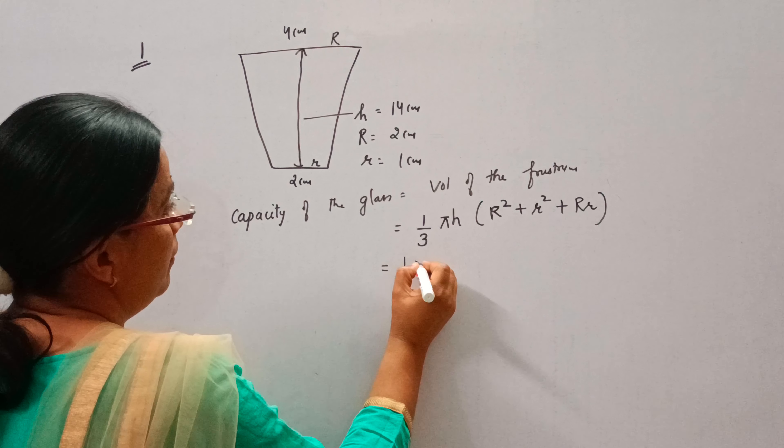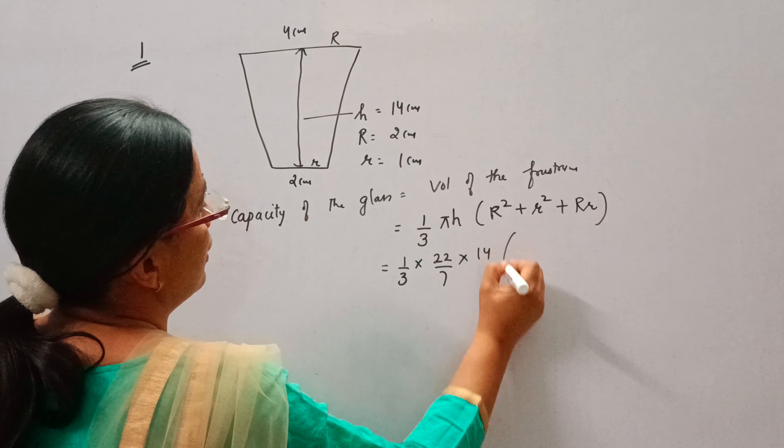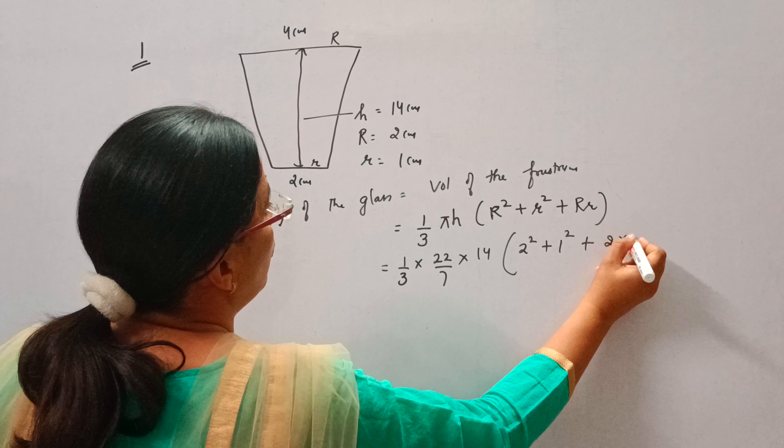1 upon 3, pi, 22 by 7, h is 14, 2 square plus 1 square plus 2 into 1.